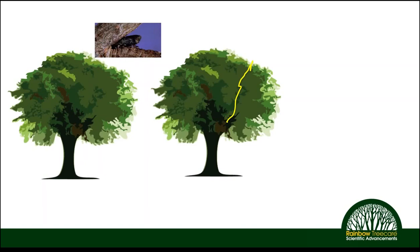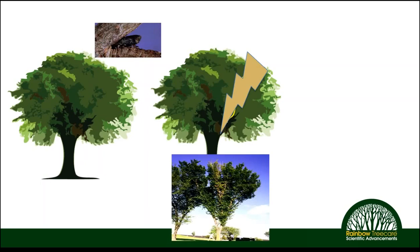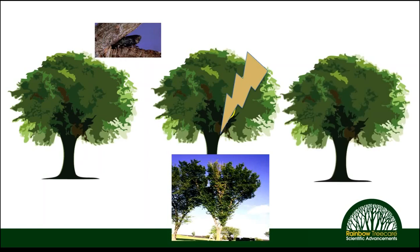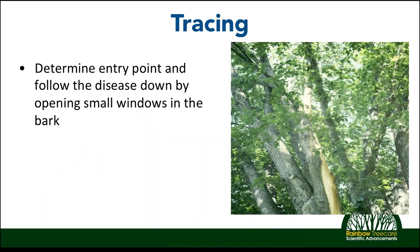Here's a model to understand what we've been describing. A healthy elm tree: a beetle comes and bites into a branch high up in the canopy. That fungus begins to grow in a predictable manner down the branch it was originally introduced into, resulting in that branch flagging — a chunk of the canopy starts to exhibit wilt symptoms. If the fungus continues to grow and reaches the base of the tree, it will kill the entire tree. But there is a window where we can come in and physically cut the fungus out of the tree — this process is called tracing.